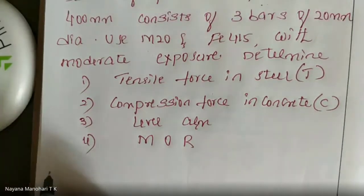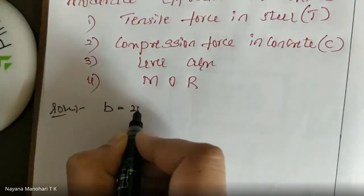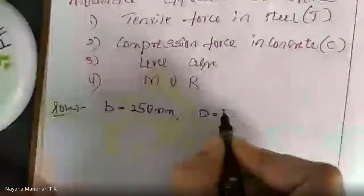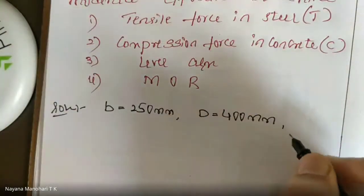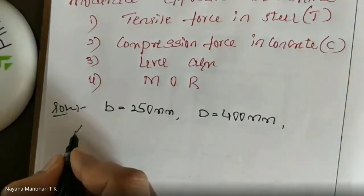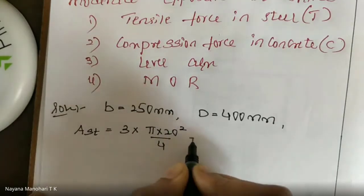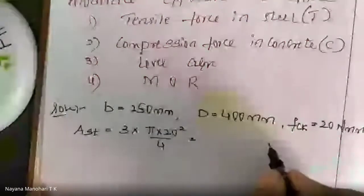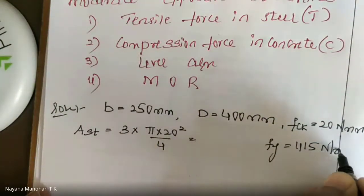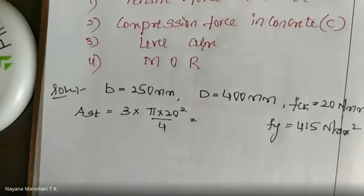First, write down the given data. B = 250 mm, overall depth D = 400 mm. The section consists of 3 bars of 20 mm diameter. Calculate AST = 3 × (π × 20²) / 4. FCK = 20 N/mm², FY = 415 N/mm². We need to calculate tensile force in steel, compression force in concrete, lever arm, and moment of resistance. The AST value is 942.4 mm².